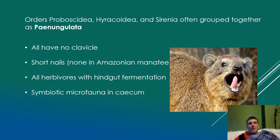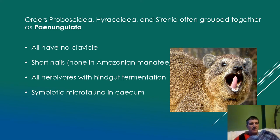They also have short nails — if you look at an elephant's foot they've got these short stubby nails, same with manatees and hyraxes, with one exception among the Amazon manatees. These are all herbivores, and they all have hindgut fermentation, which means they have a cecum. With fermenting animals you have either foregut fermenters with a rumen, or hindgut fermenters with a cecum. A cecum is a blind-ended pouch that comes off the intestine — food goes into this pouch, undergoes fermentation through bacteria in a symbiotic relationship with the host, and then oozes back out into the intestines in a more digestible state.